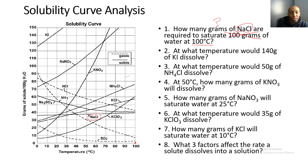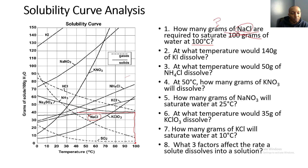I take my line for 100 degrees Celsius and bring it all the way up until it intersects the NaCl line. Once it hits NaCl, I bring my line all the way across. That shows us that we need 40 grams to saturate 100 grams of water with NaCl at 100 degrees Celsius.